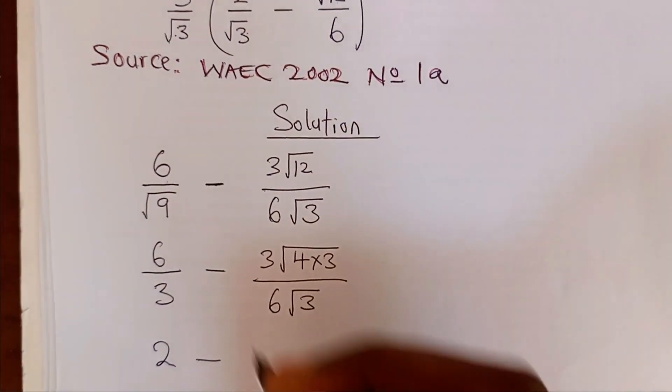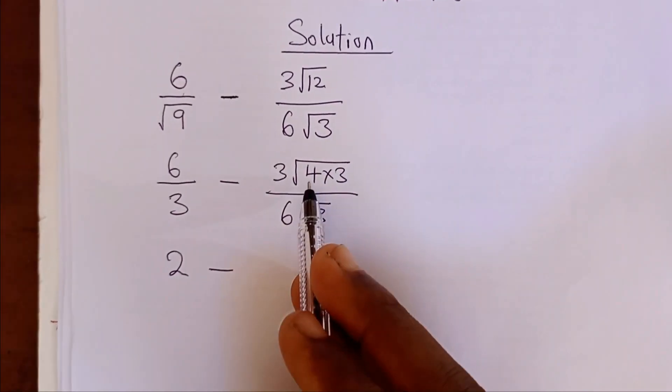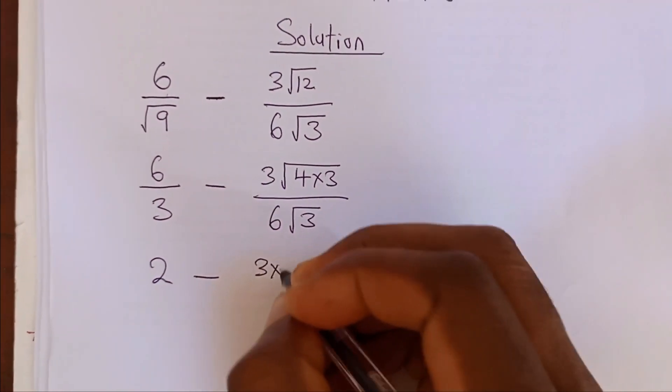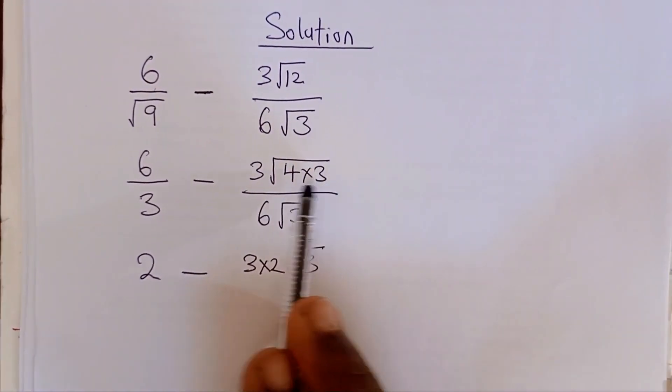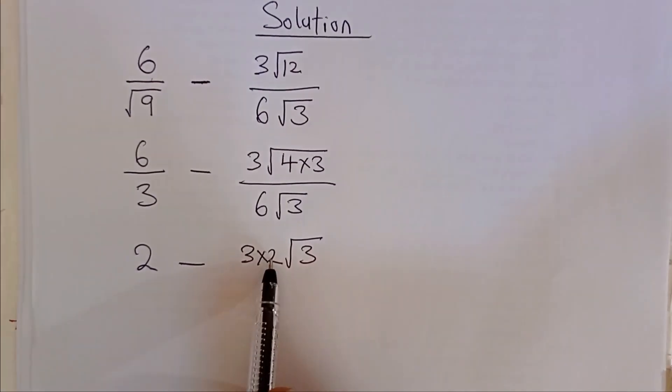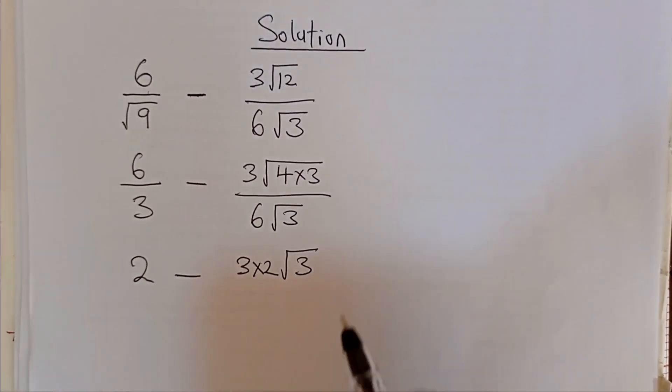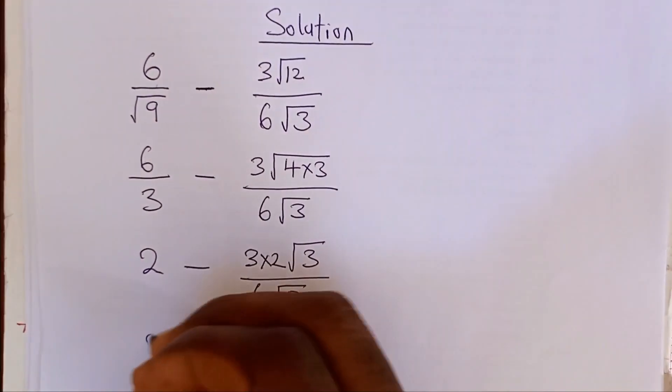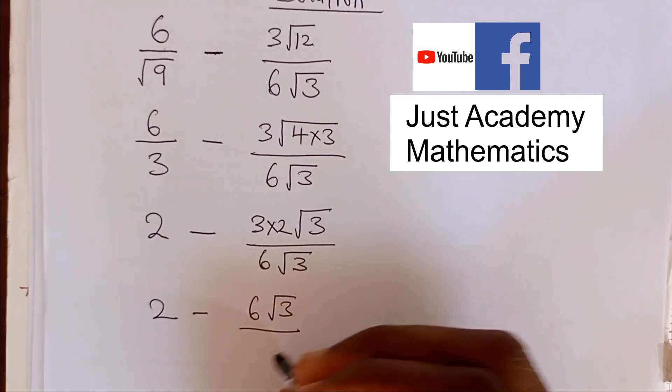Minus, the square root of 4 is 2, so 2 will come outside to meet this 3 as 3 times 2 root 3. Look at it here: because square root of 4 is 2, the root 3 over 6 root 3. So we now have 2 minus 6 root 3 over 6 root 3.